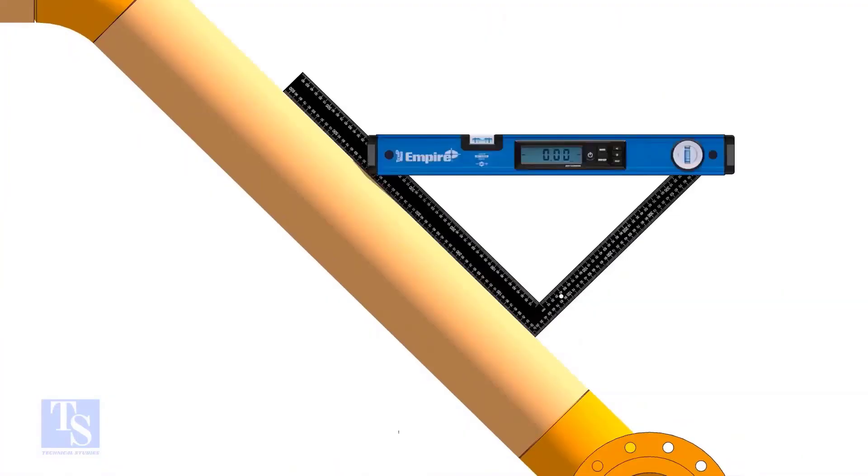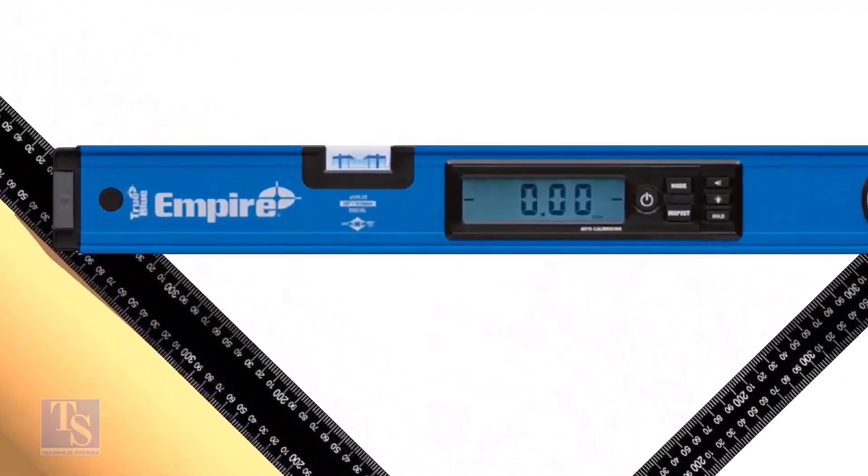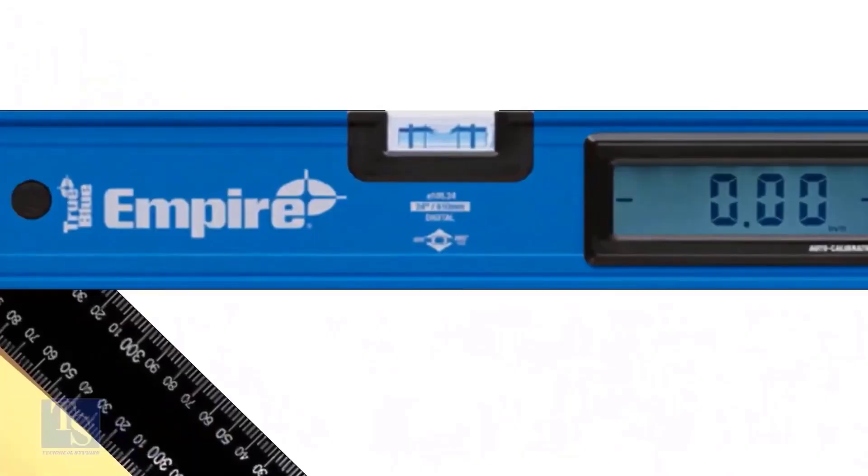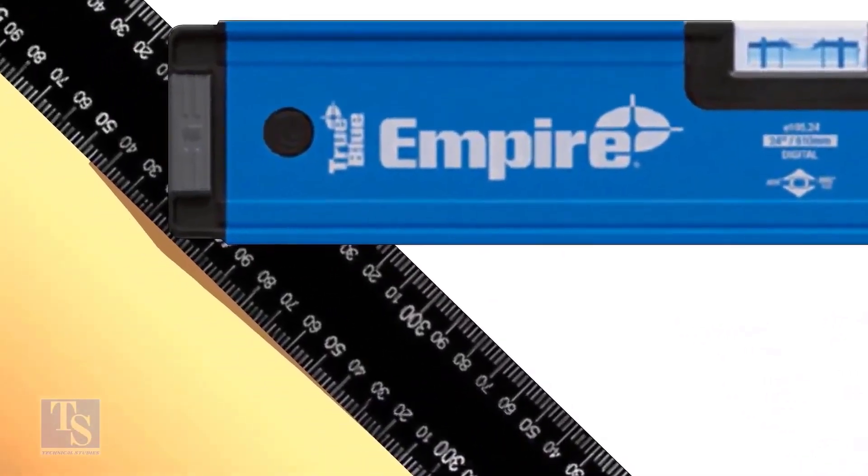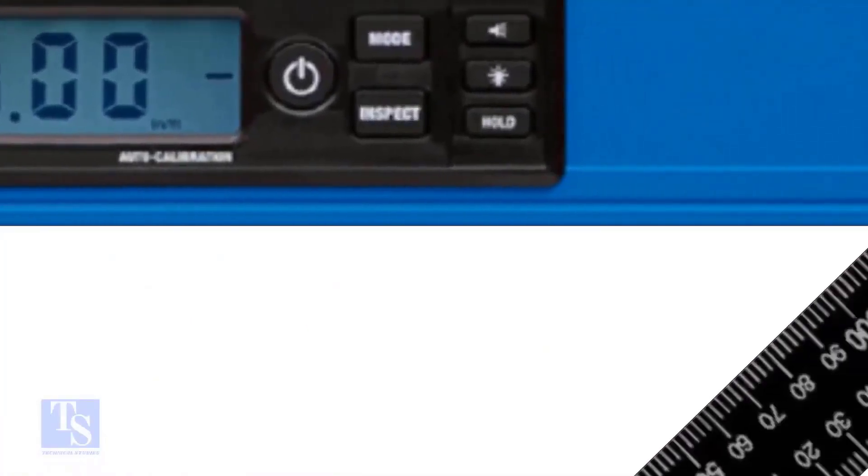Place a large set square or a right angle on the pipe, as shown. Hold a spirit level on the right angle, keeping it perfectly horizontal. Note the readings where the edge of the spirit level touches the unit scale on both sides of the right angle.